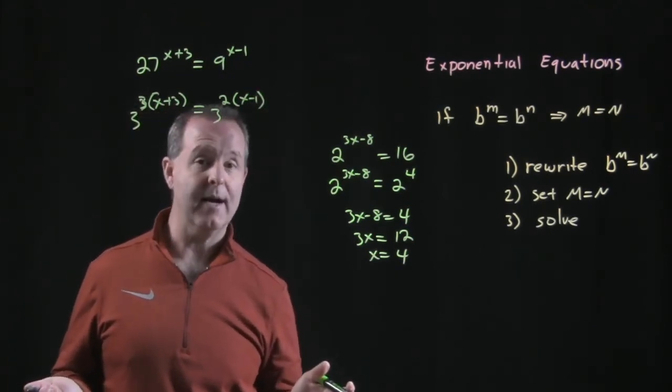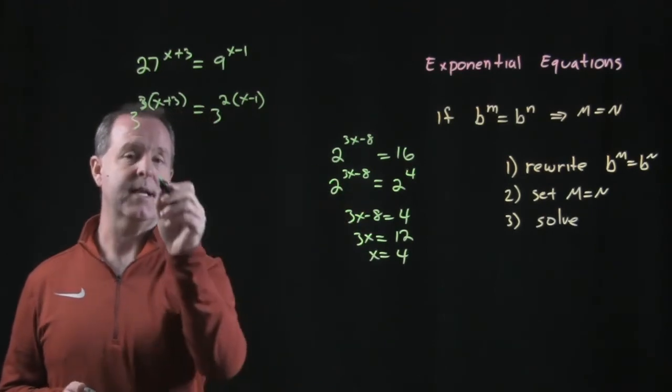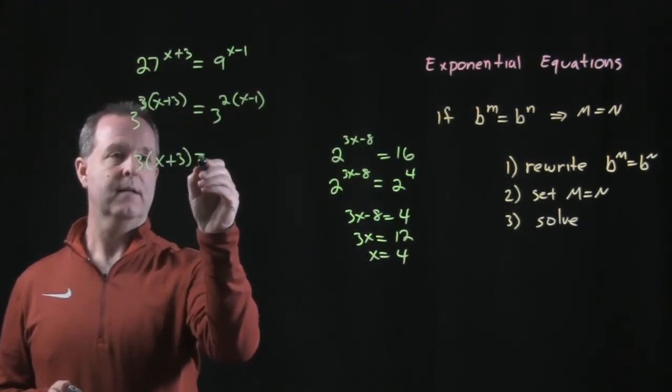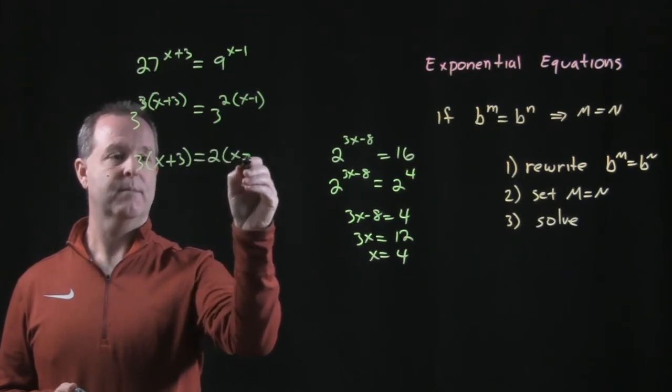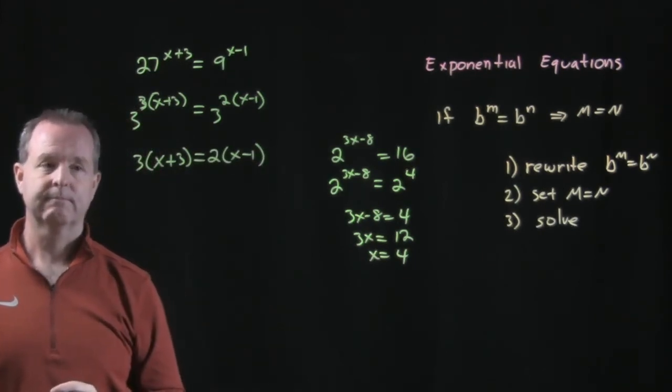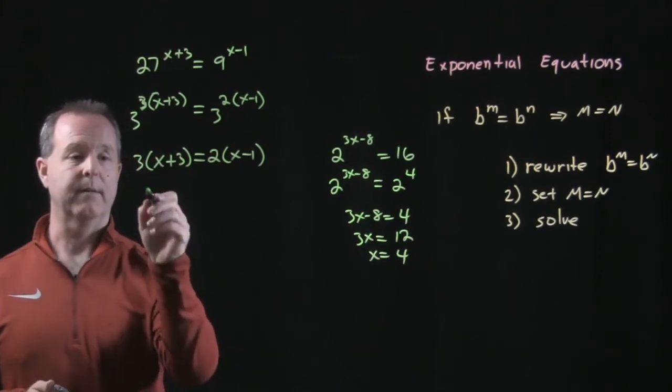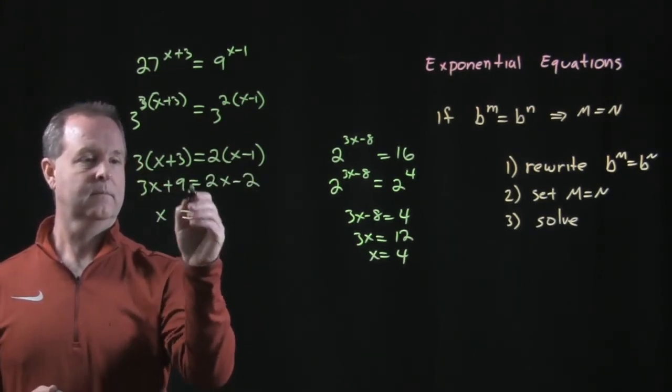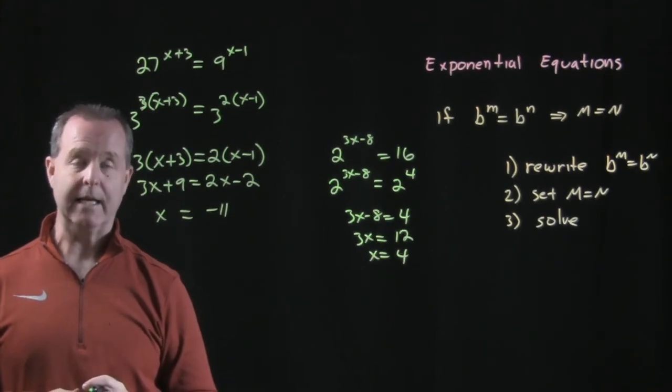So let's set the exponents equal to each other. 3 times x plus 3 equals 2 times x minus 1. Now it's just simply solving. x equals negative 11.